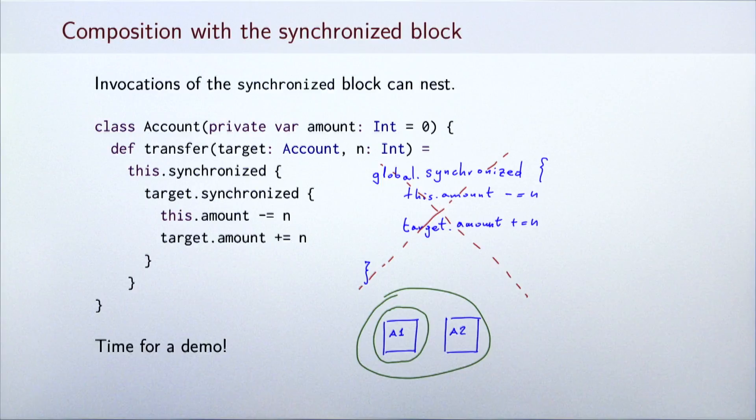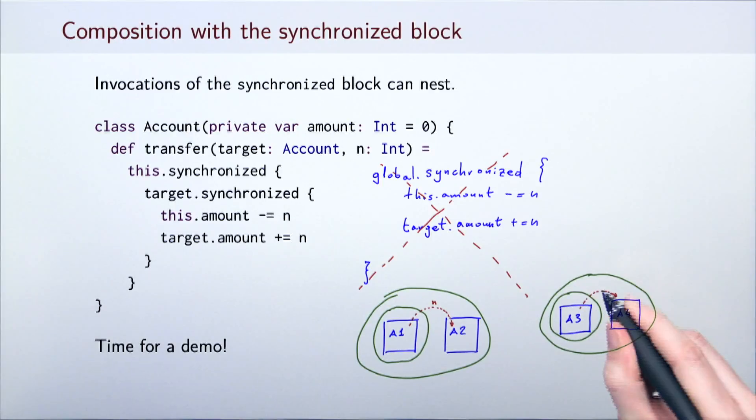For example, a thread running the transfer method first obtains a monitor on the account a1 and then obtains a monitor on the account a2. Once it has monitors of both objects, it can transfer the amount n from a1 to a2. In parallel, another thread can do the same thing with accounts a3 and a4.